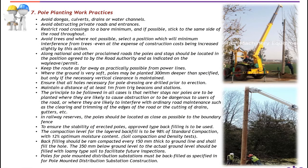Pole planting work practice. Number one: avoid dungas, culverts, string or water channels. Avoid obstructing private roads and entrances. Number seven: where the ground is very soft, poles may be planted 300 mm deeper than specified, but only if the necessary vertical clearance is maintained. Number eight: ensure that all holes necessary for pole dressing are drilled before erection.